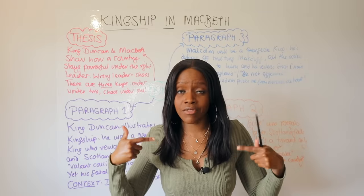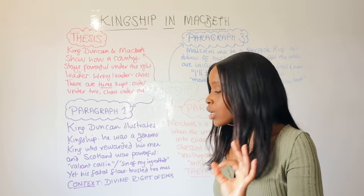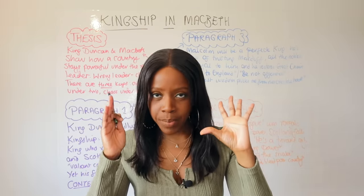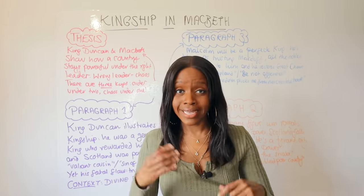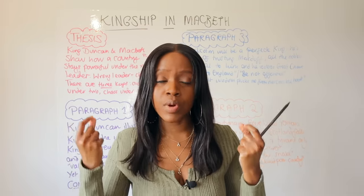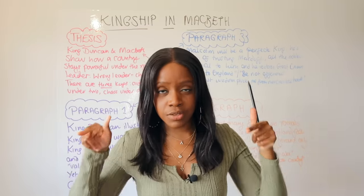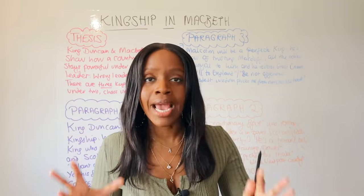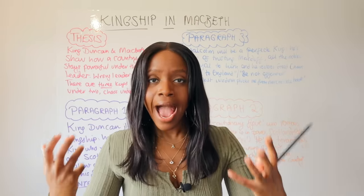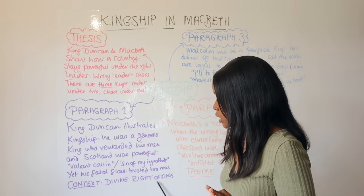King Duncan's major fatal flaw was that he trusted too much and believed in appearances. This is illustrated when he tells Malcolm, 'there's no art to find the mind's construction in the face' - reflecting on the previous Thane of Cawdor who betrayed him. So Duncan's fatal flaw is his gullibility; however, aside from that he is presented as the perfect, quintessentially generous king. When writing about King Duncan, make sure to add a context point about the divine right of kings.